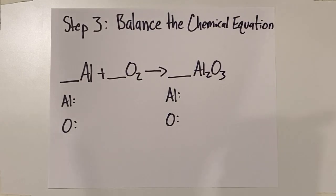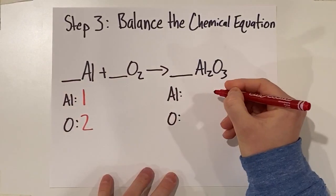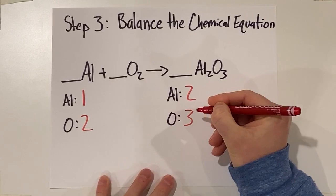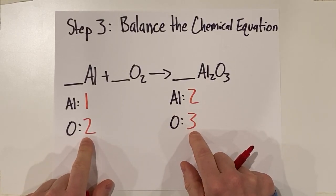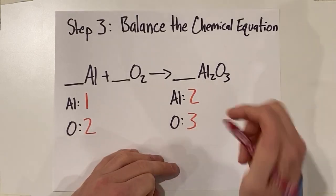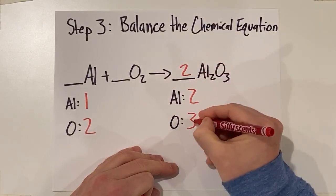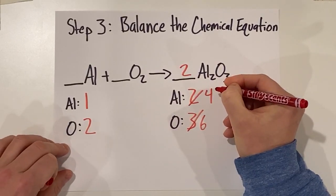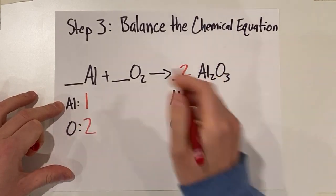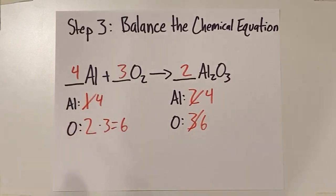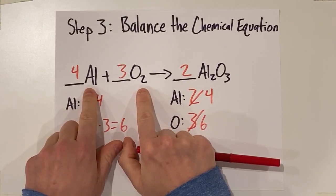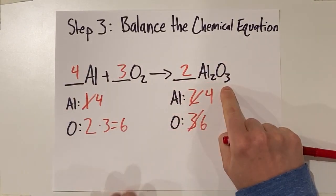Let's go ahead and balance the equation. We start with 1 aluminum and 2 oxygens, and we end with 2 aluminums and 3 oxygens. Balancing the oxygen first: if we put a 2 coefficient on Al2O3, that gives 6 oxygens and 4 aluminums. So we need a 4 coefficient for Al and a 3 coefficient for O2. There we go — we predicted the products of aluminum and oxygen coming together and made Al2O3.